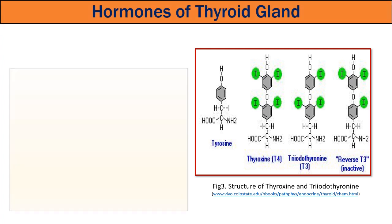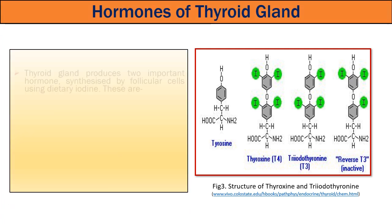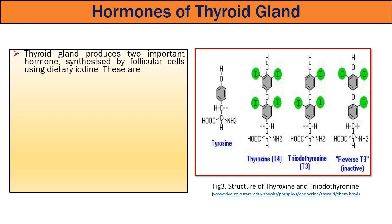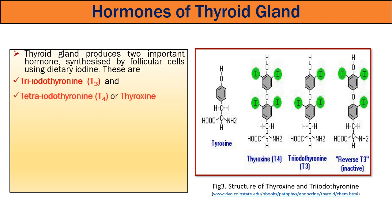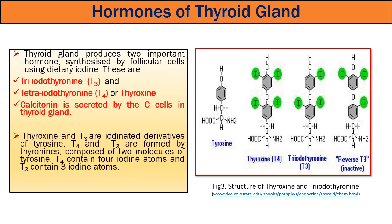What are the hormones of the thyroid gland? The thyroid gland releases two main hormones: triiodothyronine T3 and tetraiodothyronine T4, also called thyroxine. Calcitonin is another hormone released by C-cells. Thyroxine is produced in much larger quantity than triiodothyronine, but triiodothyronine is 5 to 10 times more active than T4.